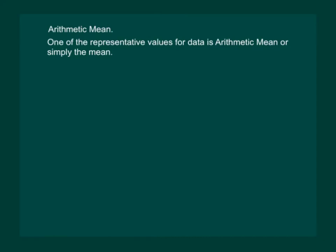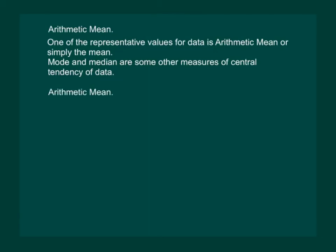One of the representative values for data is arithmetic mean, or simply mean. It is the most common measure of central tendency. Mode and median are other measures of central tendency, which we will study further in this chapter. Let us focus on arithmetic mean first. Arithmetic mean is nothing but the average.